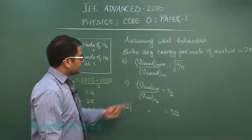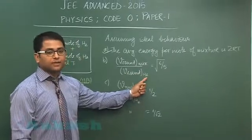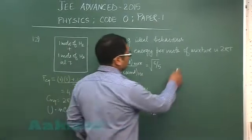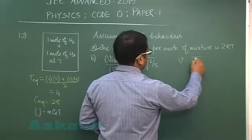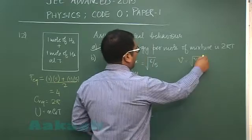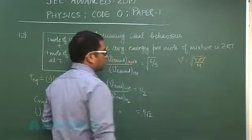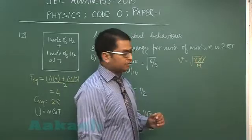Next is speed of sound in the mixture and speed of sound in helium - we need to find the ratio. We know speed of sound in any gaseous medium is given by root of gamma RT by m. R and T are the same, so all I require now is gamma equivalent for the mixture and m equivalent for the mixture.